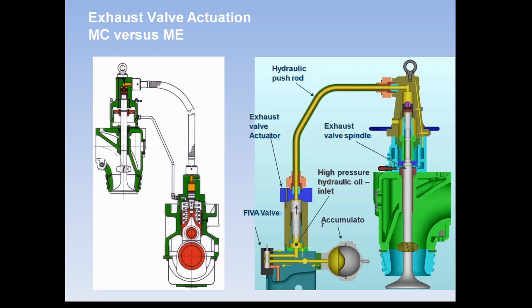As the pressure in the line decreases, the air spring which was compressed during operation brings the exhaust valve back to its closed position. Now let's look at the electronic activation. In the ME series, unlike the MC cam type series, here this is the hydraulic actuator and this is the fuel valve.